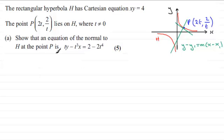So, let's start with our curve first of all. If I rearrange that, we've got y equals 4 divided by x, same as 4x to the power minus 1.